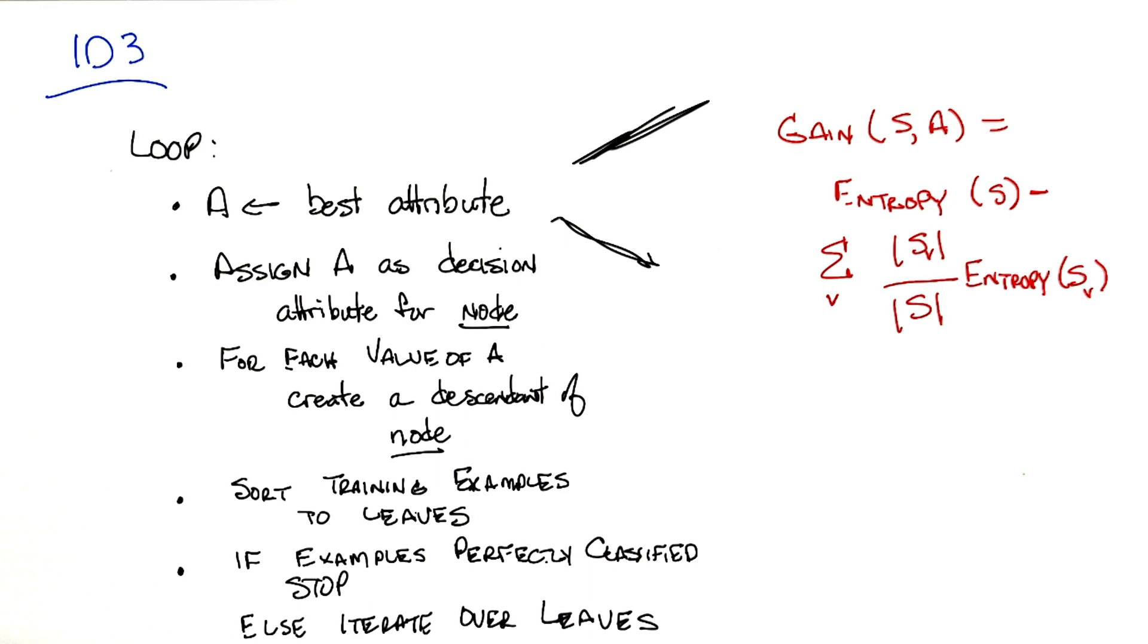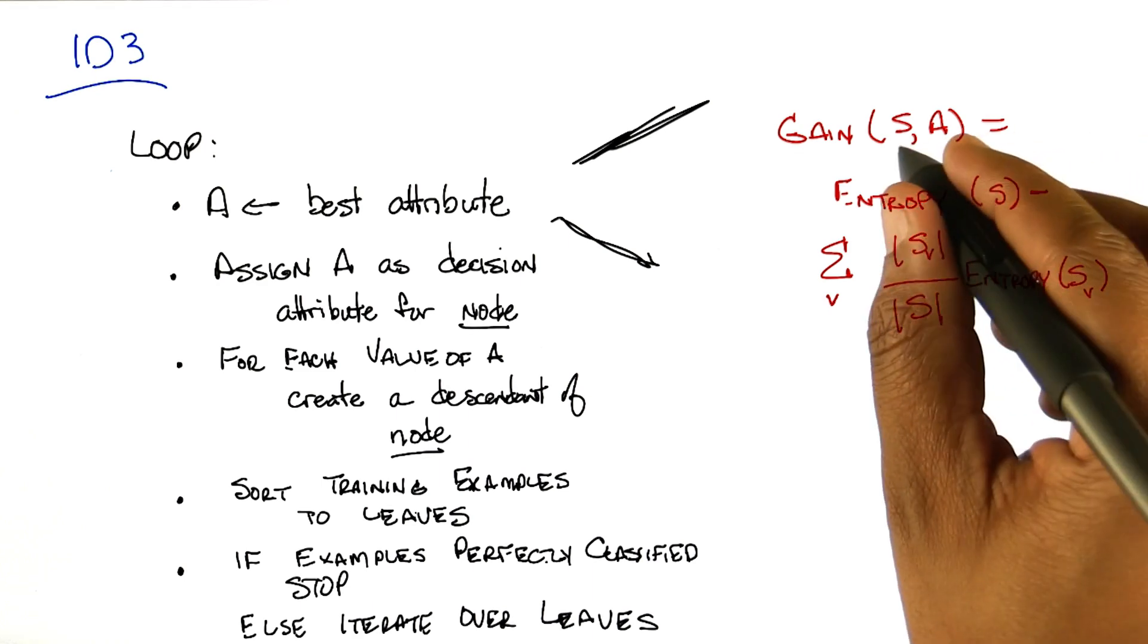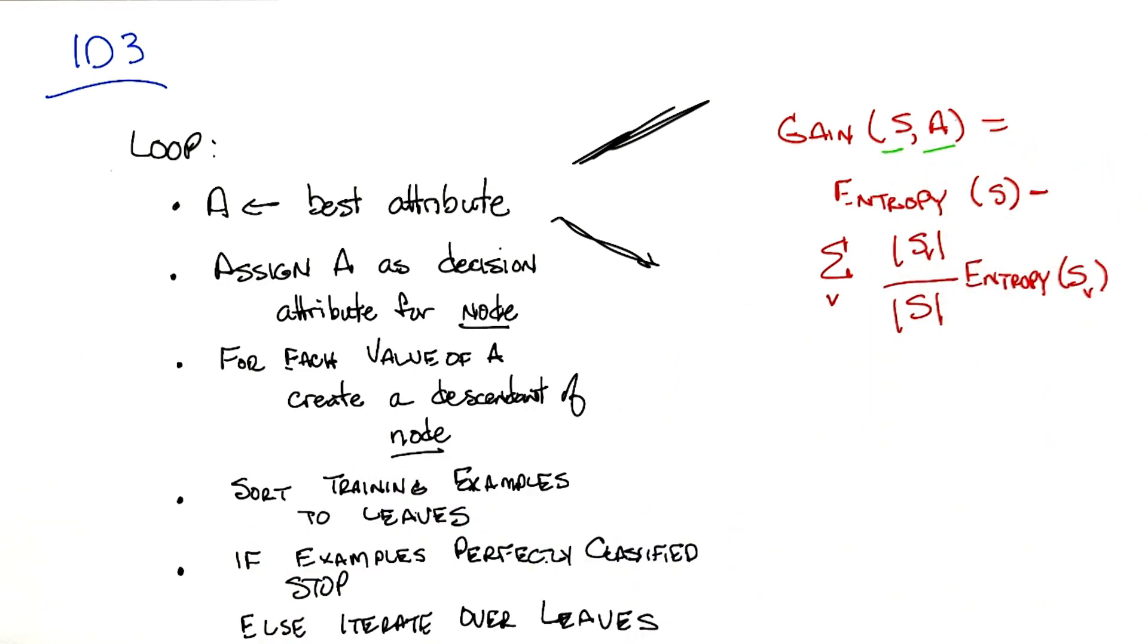So the formula is simply this. The information gain over S and A, where S is the collection of training examples that you're looking at, and A is a particular attribute. It's simply defined as the entropy, with respect to the labels, of the set of training examples you have, S, minus